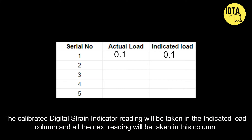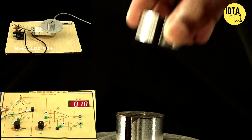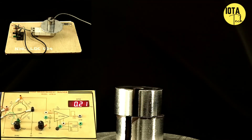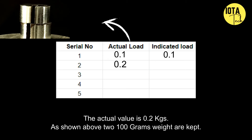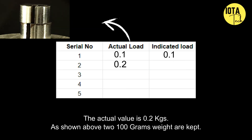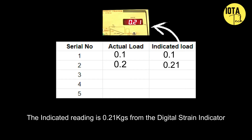The calibrated digital strain indicator reading will be taken in the indicated load column, and all subsequent readings will be taken in this column too. The actual value is 0.2 kilograms — 200 grams of weight are added. The indicated reading is 0.21 kilograms from the digital strain indicator. Now let us increase the pace of the video as we have understood how to take readings into the tabular column.